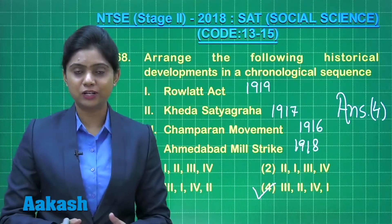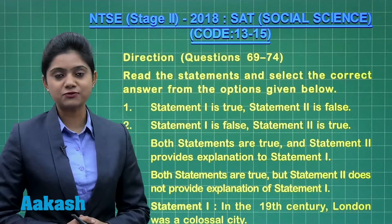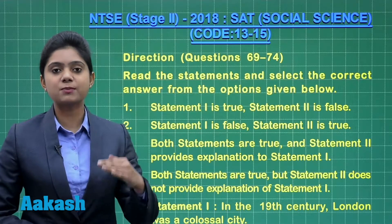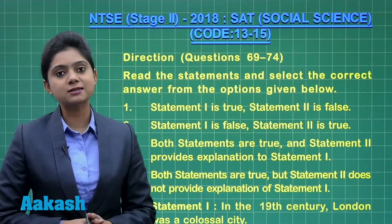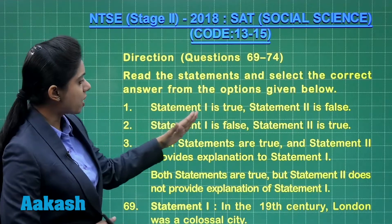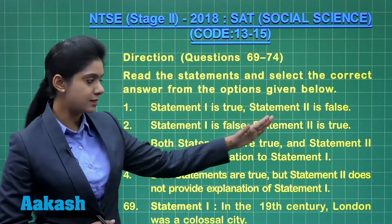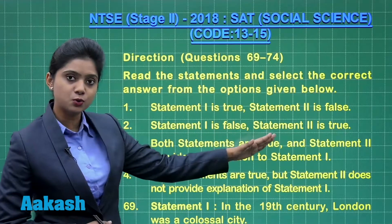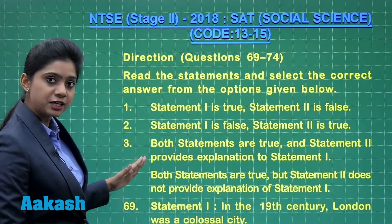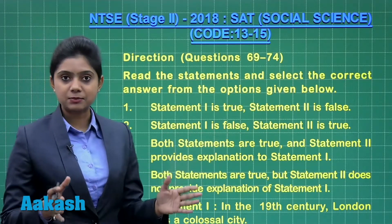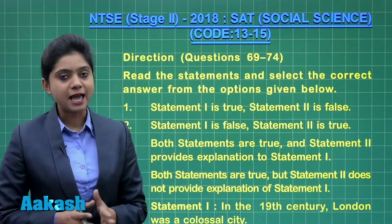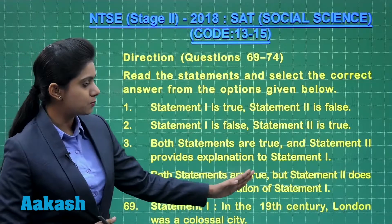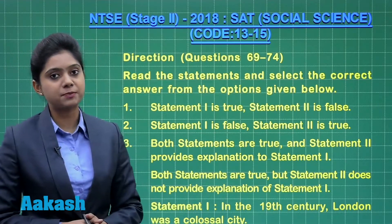Now let's move on to question number 69. Questions from 69 to 74 are a bit different — we are given two statements. We will mark our answer as option one if statement one is true and statement two is false. We will mark option two if statement one is false and statement two is true. We will mark option three if both statements are true and statement two provides an explanation for statement one. We will mark option four if both statements are true but statement two does not provide an explanation for statement one.